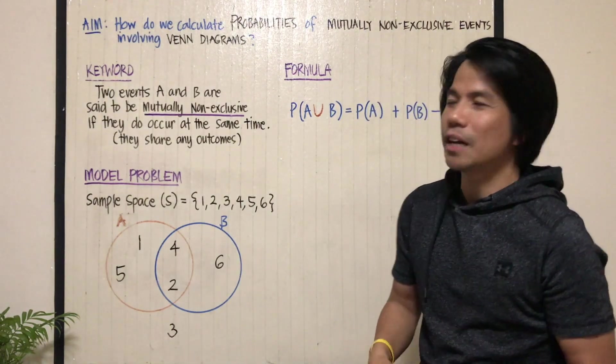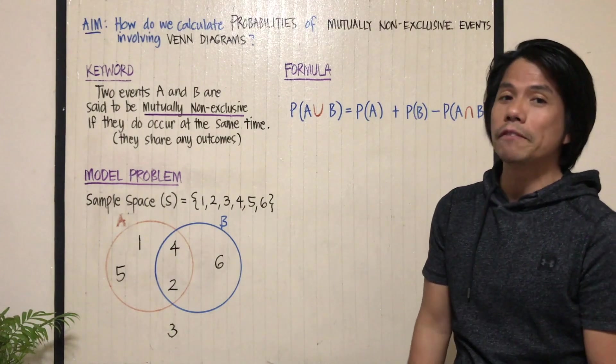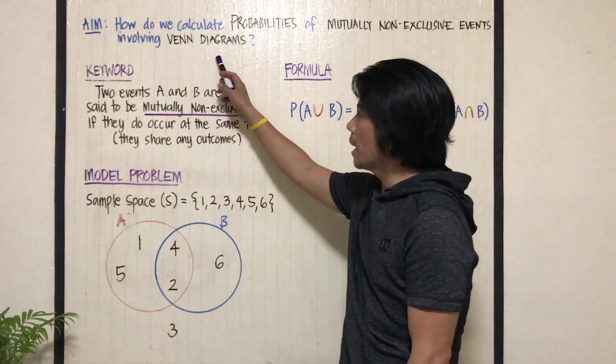Hello, today we're going to learn how to calculate the probabilities of mutually non-exclusive events involving Venn diagrams.